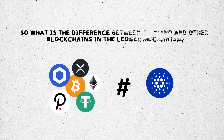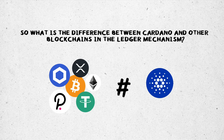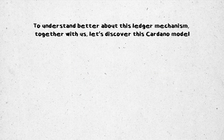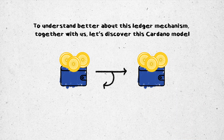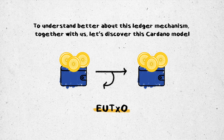However, each blockchain platform will be different. The same happened with Cardano. So what is the difference between Cardano and other blockchains in the ledger mechanism? To understand better about this ledger mechanism, let's discover Cardano's model, which is called the EUTXO — Extended Unspent Transaction Output.